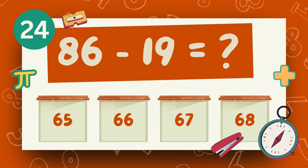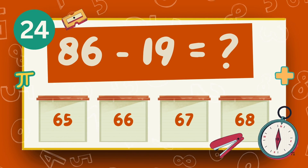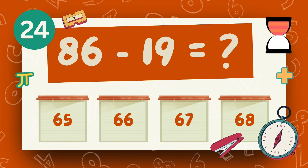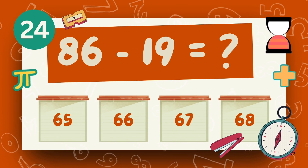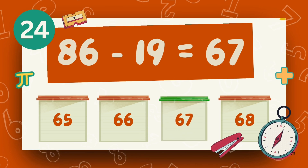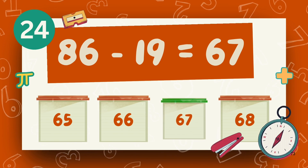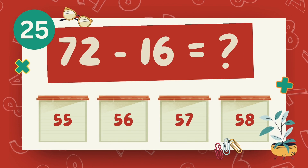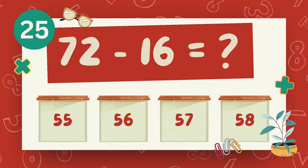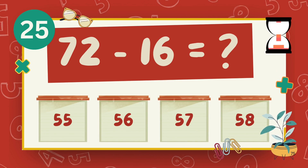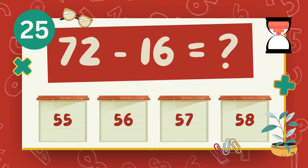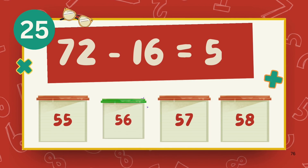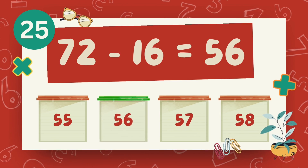What is 86 minus 19? The answer is 67. What is 72 minus 16? The answer is 56.